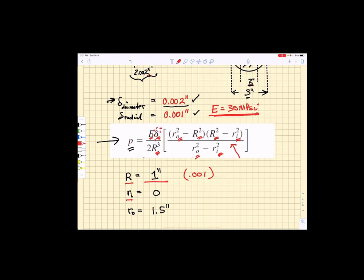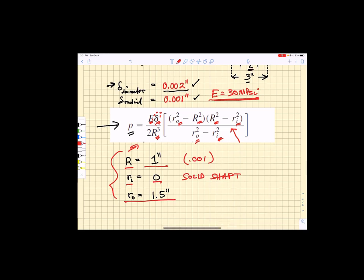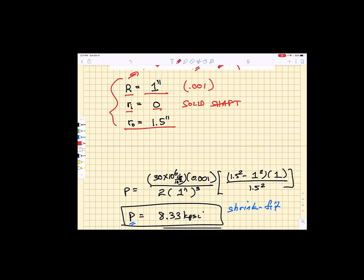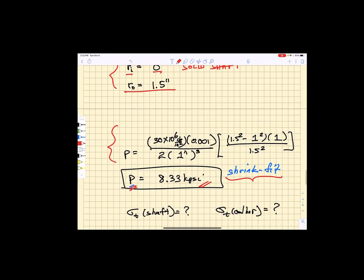The inner radius is 0 because the shaft is solid. The outer radius is the outer radius of the collar that's 1.5 inches. I take all of that info and plug it into the pressure equation. This simple equation here with everything entered and I end up with a pressure of 8.33 kpsi. That's my shrink fit pressure when I allow this shaft and collar to reach thermal equilibrium.